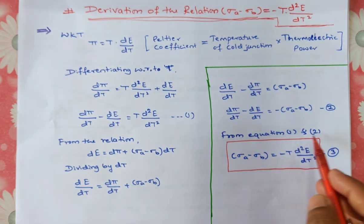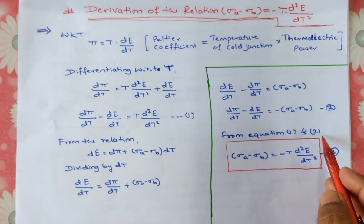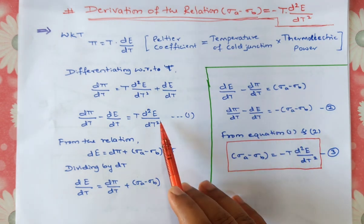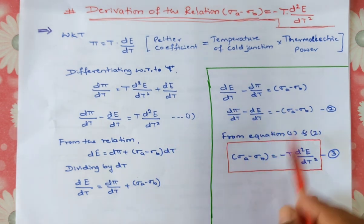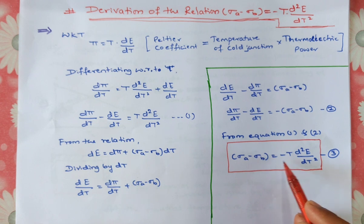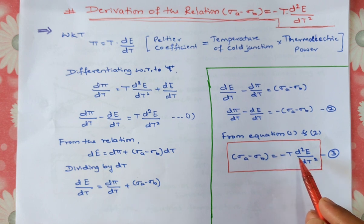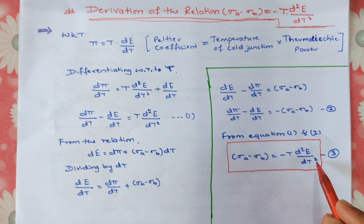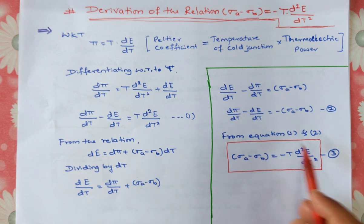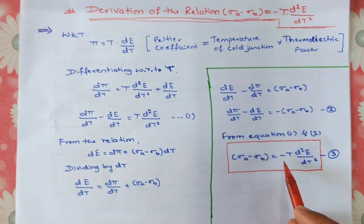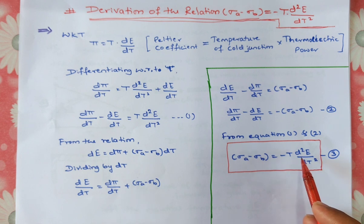Comparing equation number 1 and equation number 2, we can write sigma a minus sigma b is equal to minus t into d square e divided by dt square. This is the required relation: sigma a minus sigma b is equal to minus t into d square e divided by dt square.